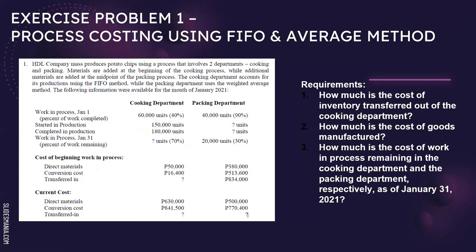Let's have exercise problem one — process costing using FIFO and weighted average methods together. Requirements: number one, how much is the cost of inventory transferred out of the cooking department? Number two, how much is the cost of goods manufactured? Number three, how much is the cost of work in process remaining in the cooking and packing departments as of January 31, 2021? HDL Company produces potato chips.